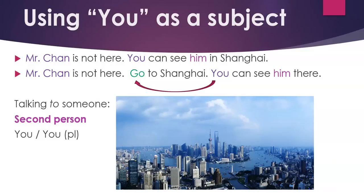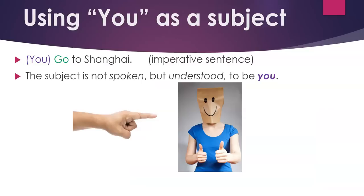What about using you as a subject? For example, 'Mr. Chun is not here. You can see him in Shanghai.' Or 'Mr. Chun is not here. Go to Shanghai. You can see him there.' When we're talking to someone, we use the second person. In English, you can refer to one other person or many other people that you're talking to. When using you as the subject, you don't always have to repeat you, you, you. Sometimes you can just say something like: 'Go to Shanghai.' That's what we call the imperative sentence. The subject you is not spoken, but it is understood to be you.